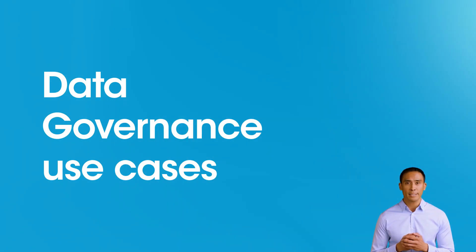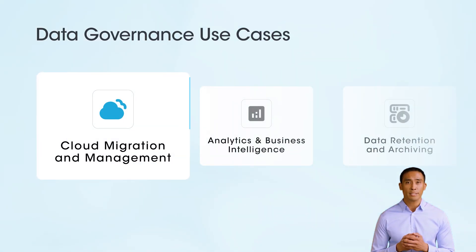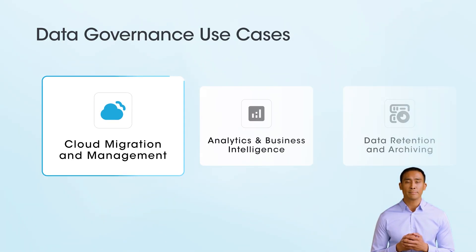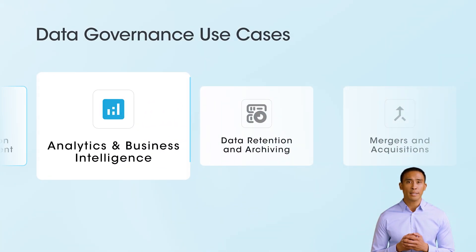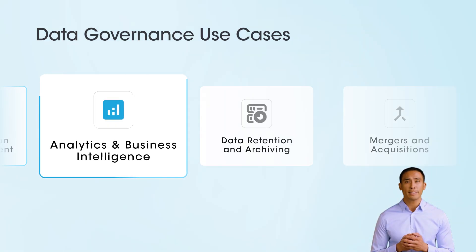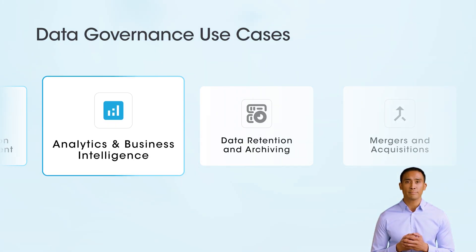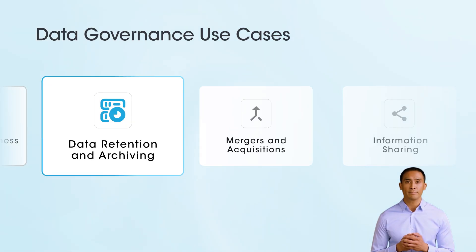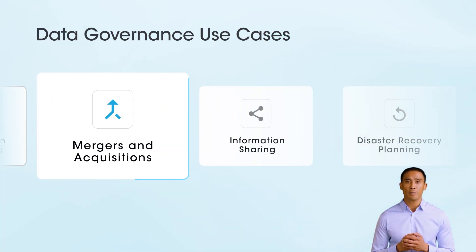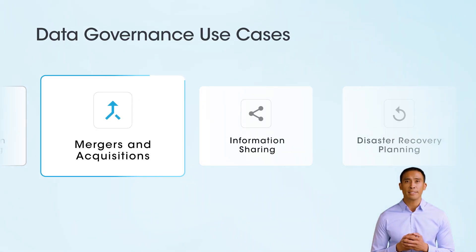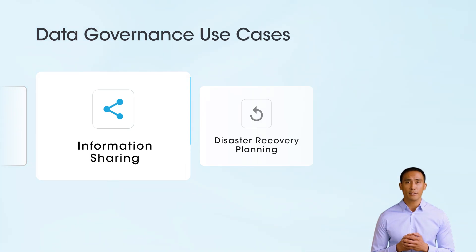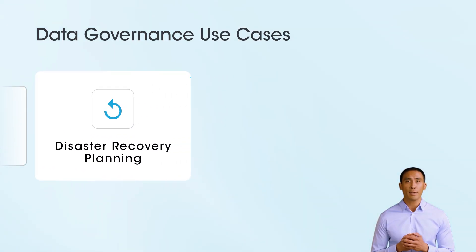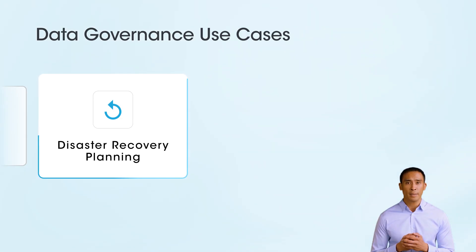For data governance use cases, classification helps determine which data can be safely moved to the cloud and what security measures are needed, reducing risk and optimizing storage costs. Classifying data ensures high-quality, relevant data is used for AI/ML models and insights, improving the accuracy of business decisions. Set retention policies based on data classification to comply with laws and reduce storage costs. Identify sensitive and valuable data assets during M&A activities to ensure proper valuation and data protection. Guide decisions on sharing information with partners, vendors, or the public, reducing inappropriate disclosure risks. Prioritize recovery efforts for critical data to minimize downtime and financial loss during disasters.